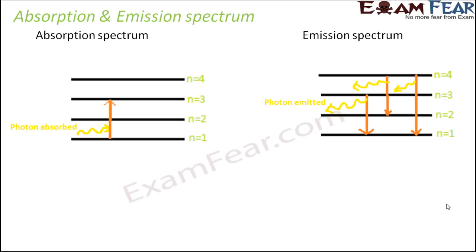These diagrams will clarify the thought further. In the first case you see the absorption spectrum, where an electron jumps from a lower energy level to a higher energy level and as a result it absorbs a photon. The lines which show electrons jumping from lower to higher energy level form the absorption spectrum. In the second case, photons are emitted at every process, and these lines together form the emission spectrum.